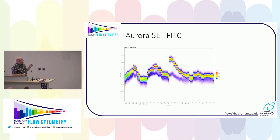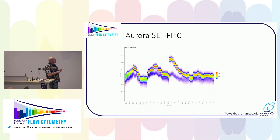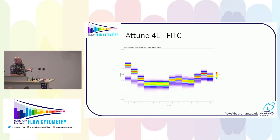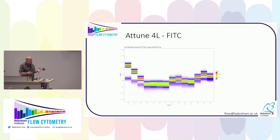This is FITC from an Aurora. We have the spectral plot: the blue laser excites the fluorophore, it emits at about 530–550 nanometers, and this is what we see — but we also see these other emissions, which is the spectral pattern. This is what we are unmixing. And looking at FITC on the Attune — a four-laser, 14-detector Attune — we have lower density data, but we still have a pattern. We have the 530 emission from the blue laser, a little bit from the violet, and possibly a little from the red. It's still a spectral pattern.